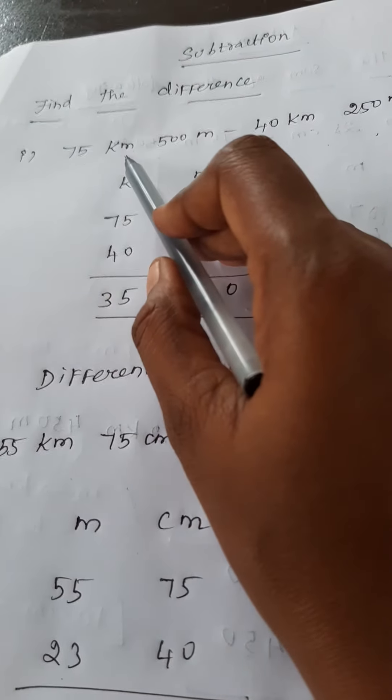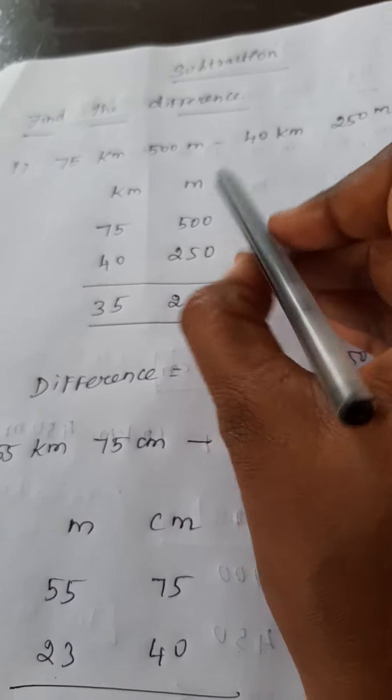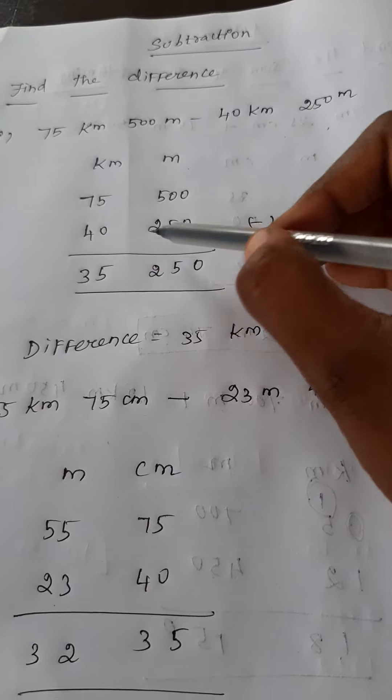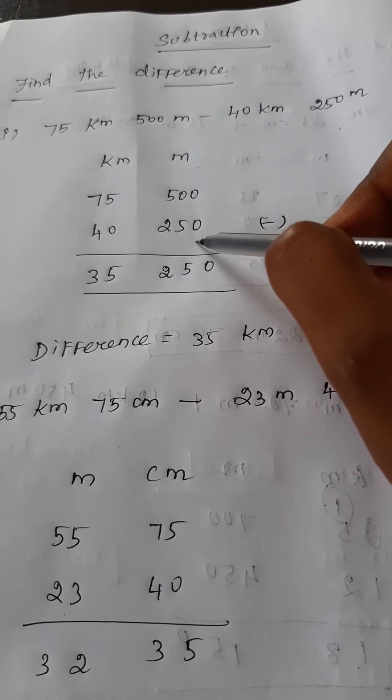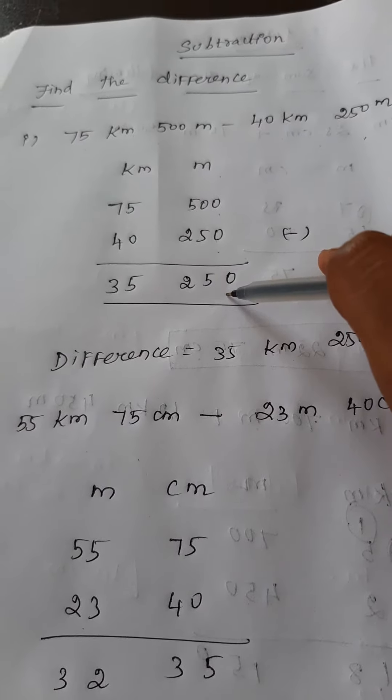Same way, I write kilometer here, meter here itself. Now 75 kilometer, where do I write the? Here itself. And 500 meter? Here. And same that 40 kilometer and 250 meter.